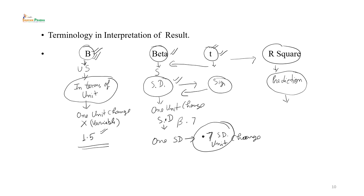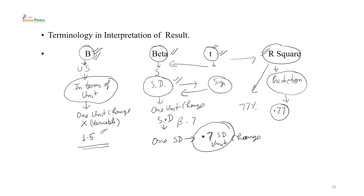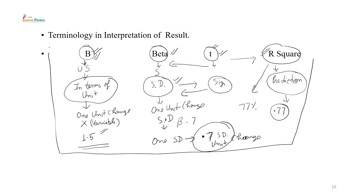r square यदि 0.77 हो तो इसका अर्थ है कि predictor variable से criterion variable पर 77% variance predict कर सकते हैं। r square हमें बताता है कि criterion variable में एक या एक से जादा predictor variables मिलकर कितने percent variance predict करते हैं। इस प्रकार regression की basic interpretation की terminology — b, beta, t, r square — की discussion complete हुई।